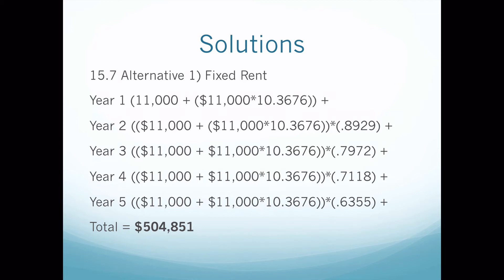Going down to year 5, again you take $11,000 times 10.3676 plus $11,000 — you should have the same answer for your first part — and then discount that by 0.6355, which is the PV factor for four years at 12%. So our first option is $504,851.